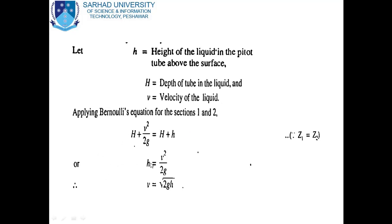After getting h = v²/2g, we find the value of v. We get v = √(2gh). This is the final equation for a Pitot tube, which is used for finding the velocity of liquid flowing in a pipe or channel.